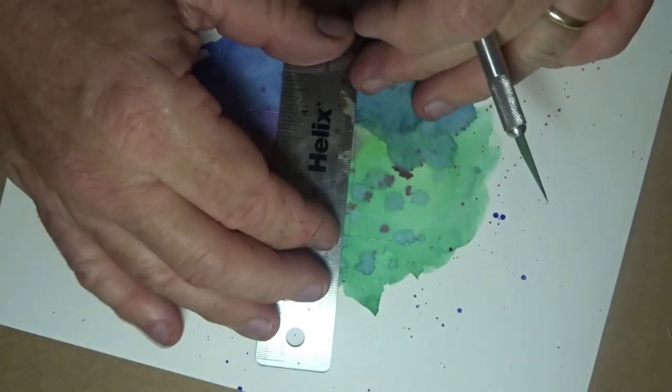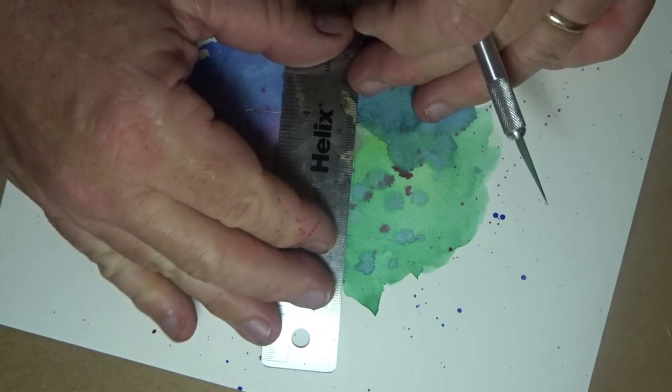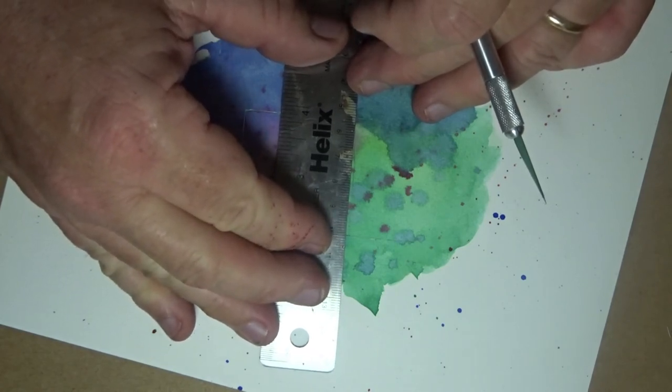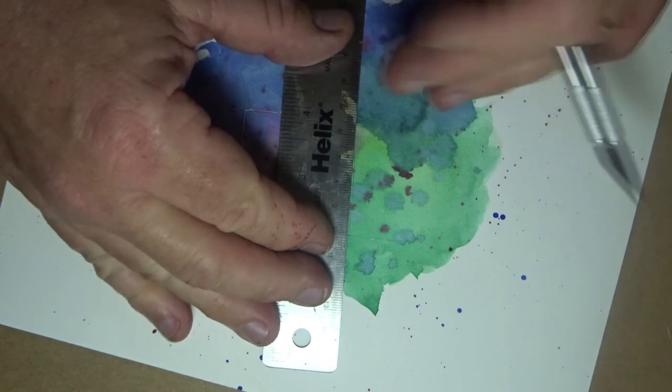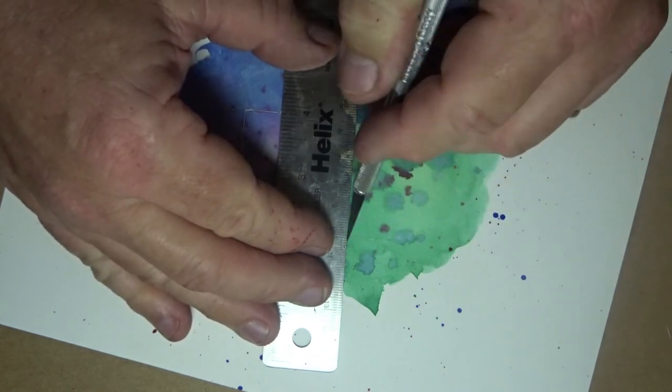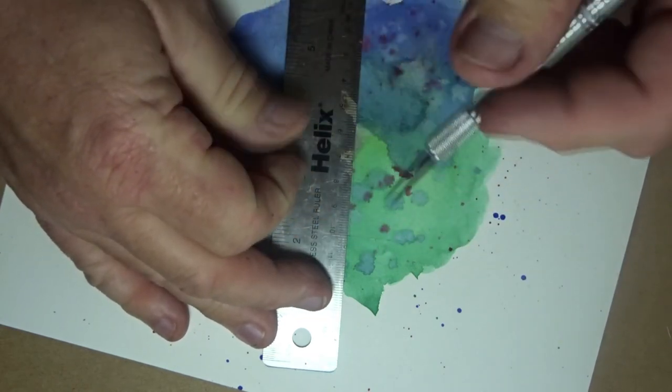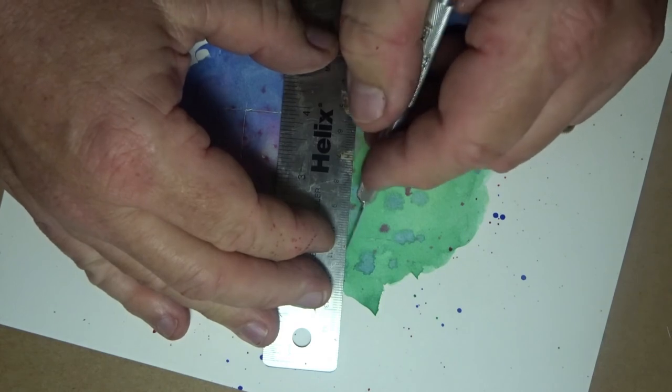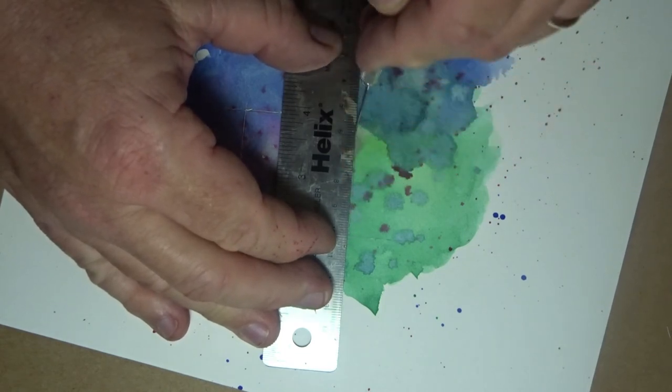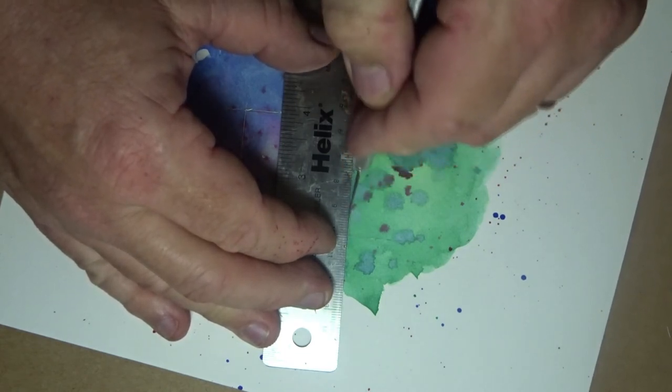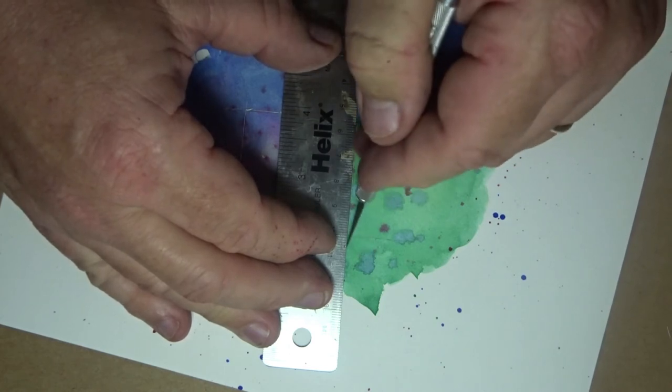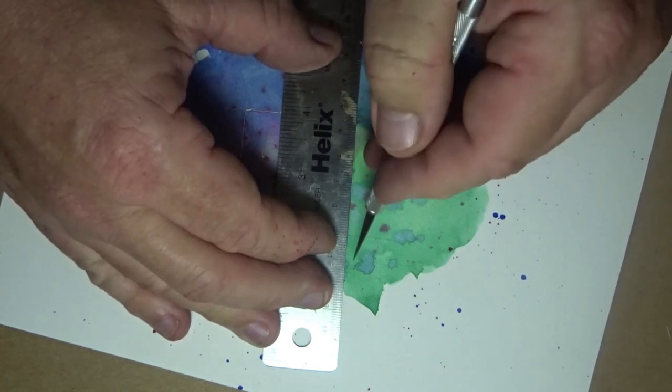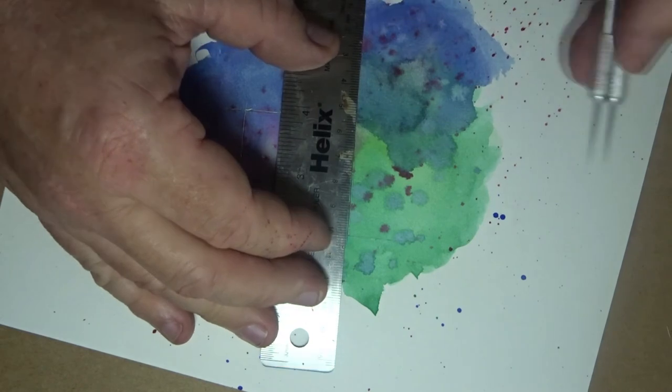There's something else interesting that happens once you cut out these samples. So we're going to be pulling this out of this little wet-on-wet wash, and these edges become part of the whole composition.